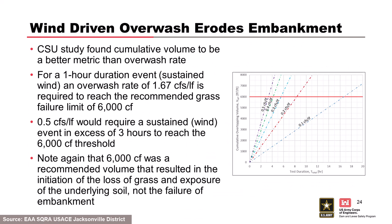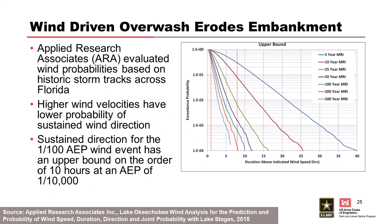Comparing the design criterion of 0.1 cfs/ft to CSU's 6,000 cubic feet failure volume, you'd need 16 hours of sustained overwash at the one-hour 100-year wind speed to reach failure. Sixteen hours of wind in a constant direction at 100-year intensity in Florida means hurricanes. Work done on Herbert Hoover Dike looked at the probability of sustained wind speeds: counterclockwise rotating hurricanes change direction as the eye wall passes, so sustaining 100-year winds in one direction for 16 hours has a very low probability.